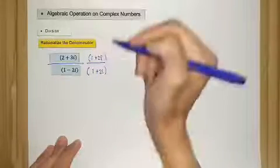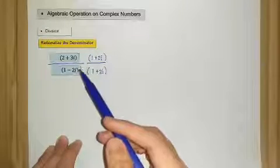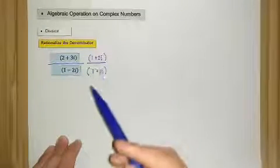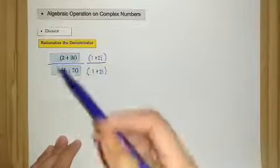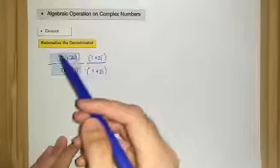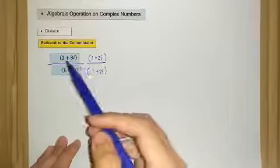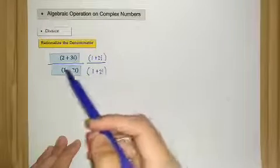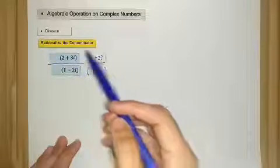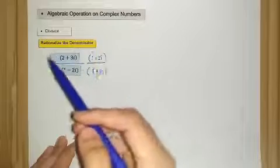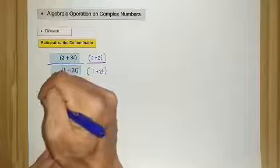We multiply the original number by a fraction using the conjugate — this is essentially multiplying by 1, so we don't change the value, just the form. We now have two parts multiplying each other: the numerator on top and the denominator on the bottom.